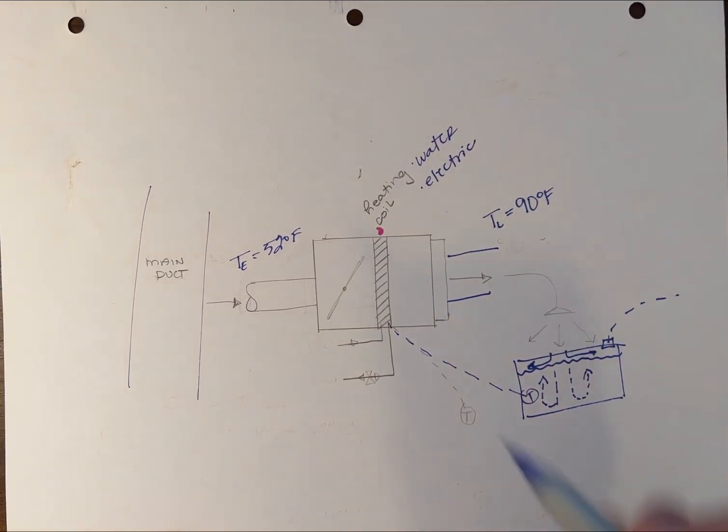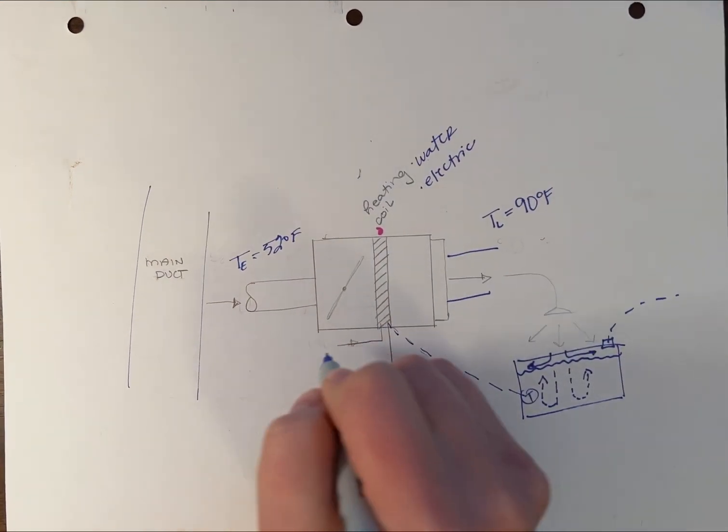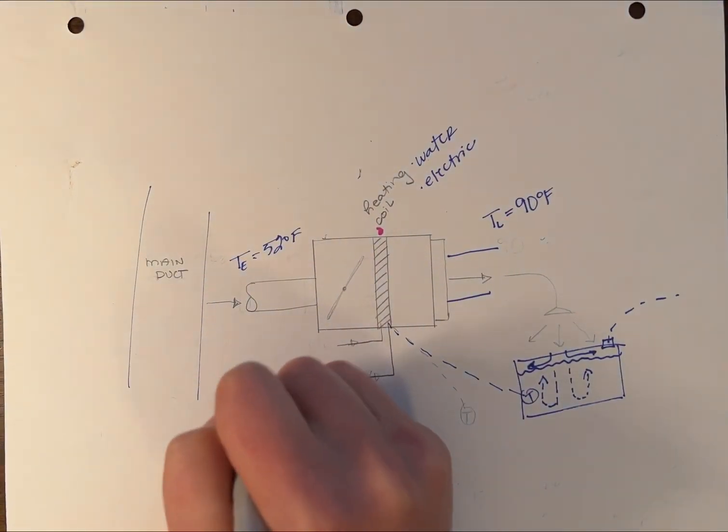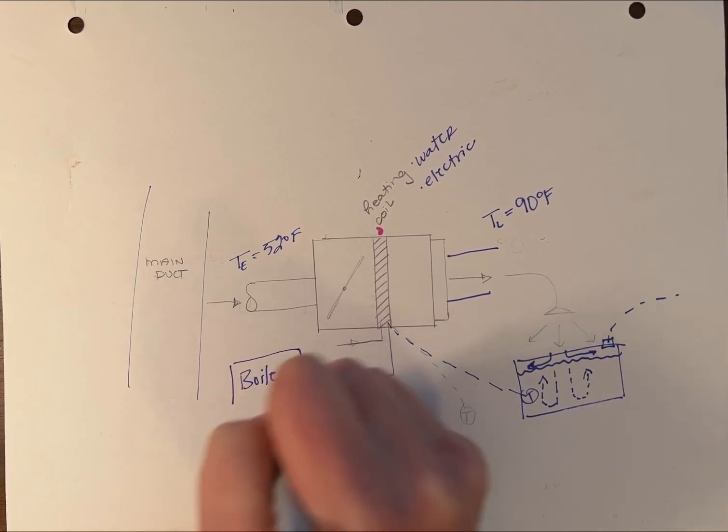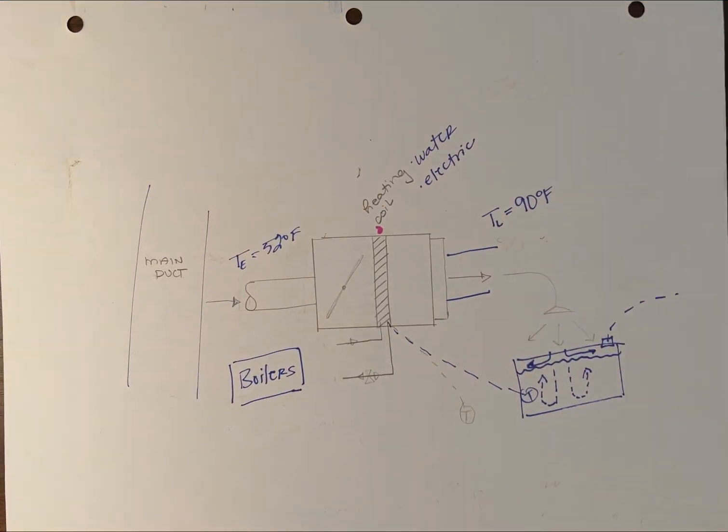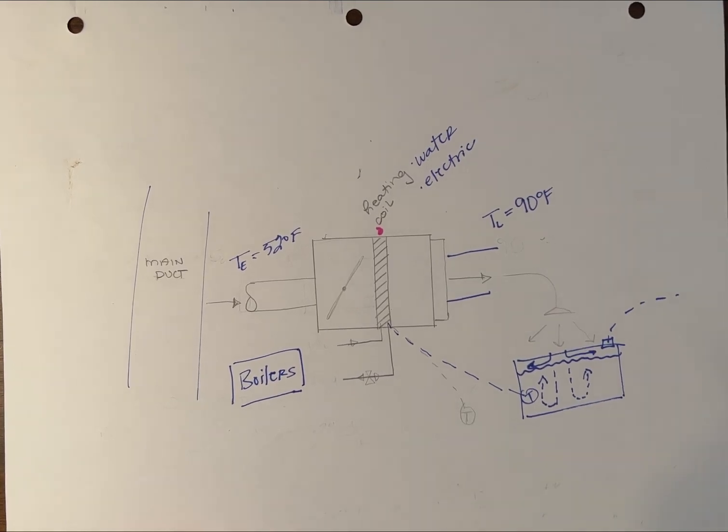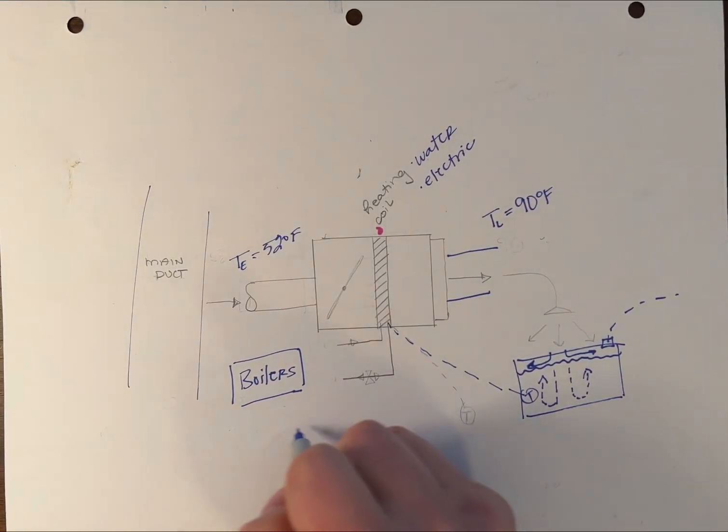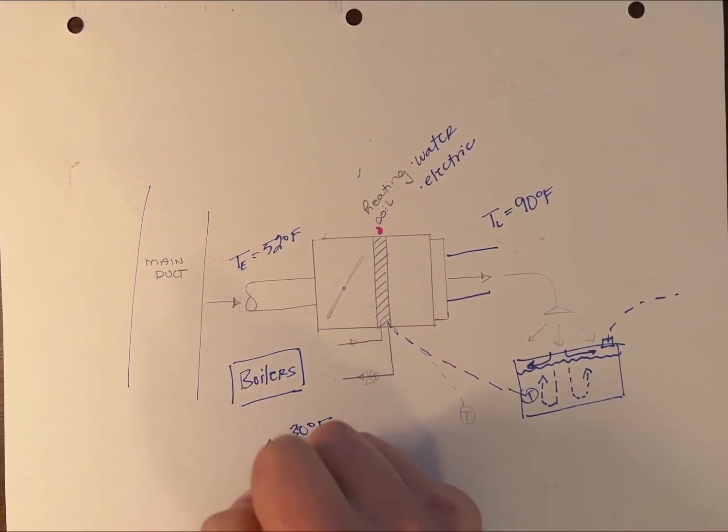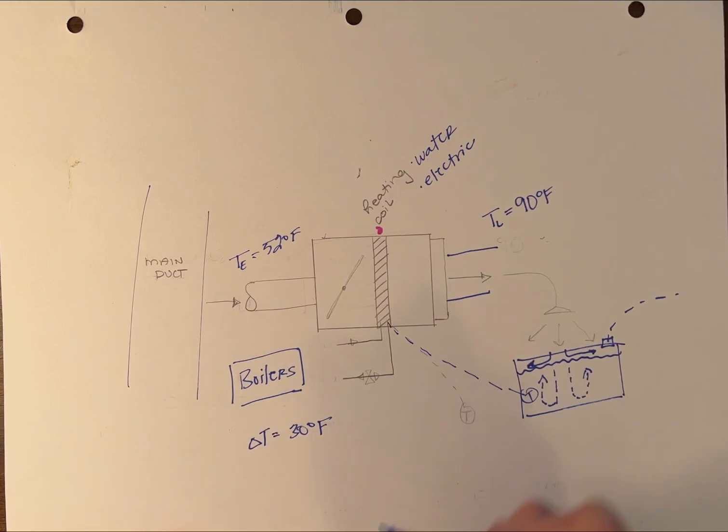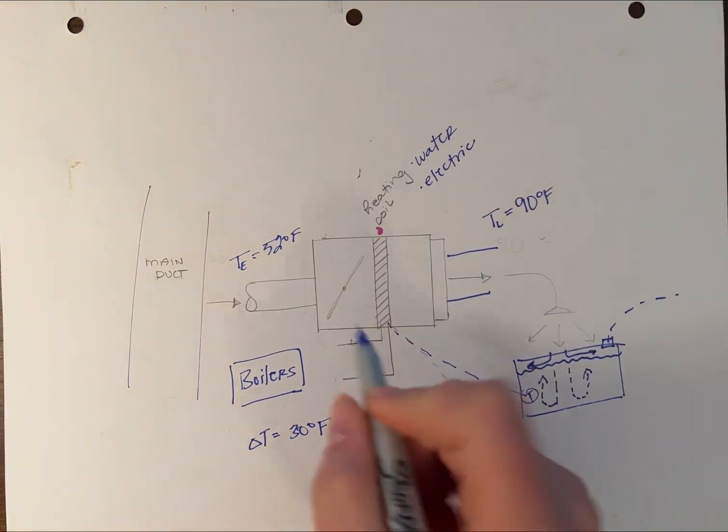Hot water comes from your boilers, so this is either an existing system or one you're planning to design. Typically, you'll see a 30-degree delta T on your water temperatures for how the coil is designed.